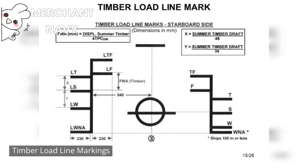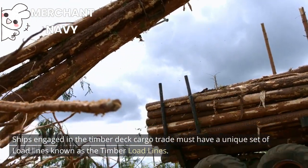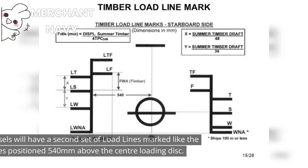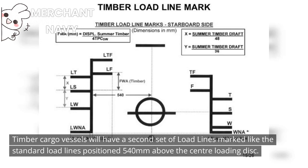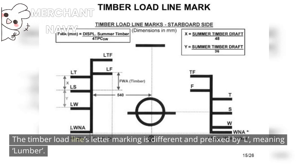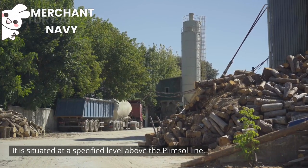Timber load line markings. Ships engaged in the timber deck cargo trade must have a unique set of load lines known as timber load lines. Such vessels shall comply with the Code of Safe Practices for ships carrying timber deck cargo, obtaining greater reserve buoyancy and lesser summer freeboard. Timber cargo vessels will have a second set of load lines positioned 540 mm above the center loading disk. The timber load line letter markings are prefixed by L, meaning Lumber. LS — Lumber Summer: its upper edge marks the summer saltwater timber loading, situated at a specified level above the Plimsoll line.